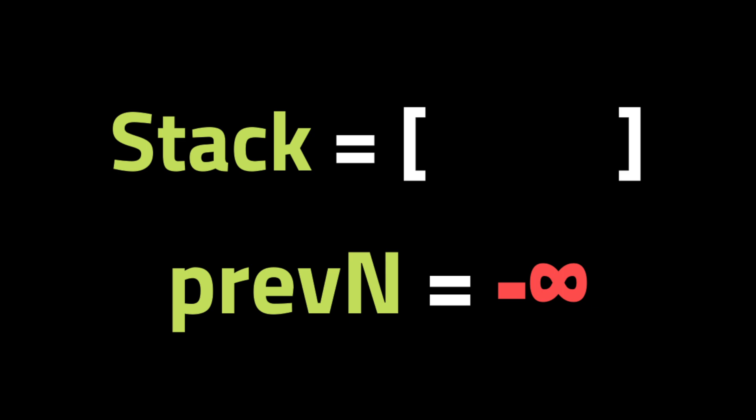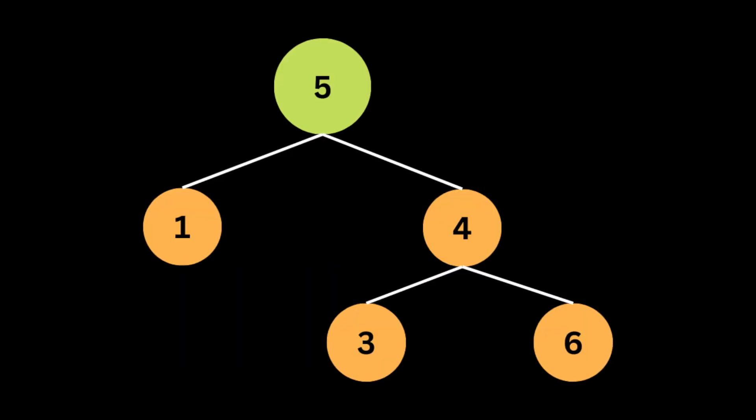The variable is used to store the previous node's value to check if the values in the tree are in the correct order for a binary search tree. When we store the previous value, we compare it to the current node's value and check if it's in the correct range. The variable will be initialized to negative infinity to ensure the first node visited will always have a value greater than the previous value.